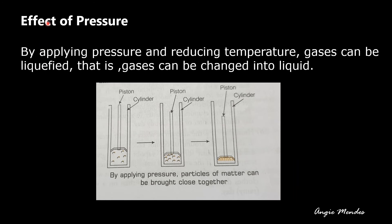Now let us discuss how pressure can bring about a change in the state of matter. By applying pressure and reducing temperature, gases can be liquefied. In a cylinder containing gas, if a piston is used to push and apply pressure, the particles are brought closer together. An increase in pressure brings the particles closer and increases the force of attraction between them, bringing about a change in the state of matter from gas to liquid.